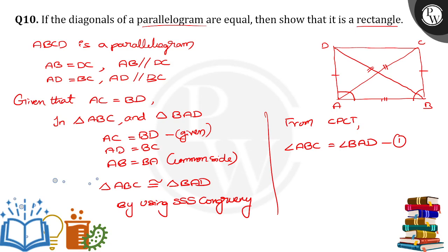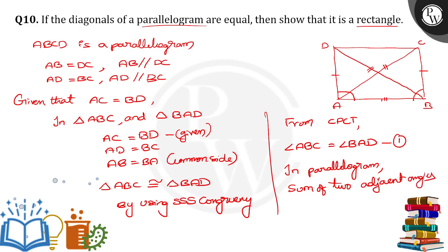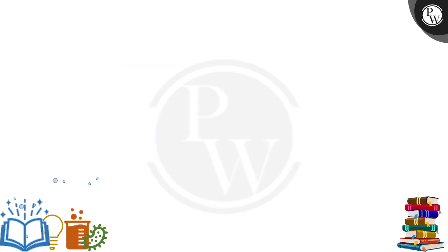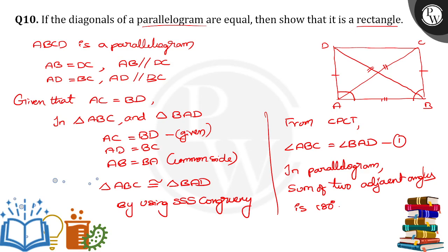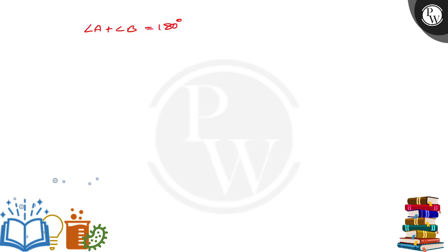Moving to the parallelogram: in a parallelogram, the sum of two adjacent angles is equal to 180 degrees. Which means angle A plus angle B is equal to 180 degrees. Since both angles are equal from equation 1, we write angle A plus angle A equals 180, so two times angle A equals 180, giving angle A equal to 90 degrees.